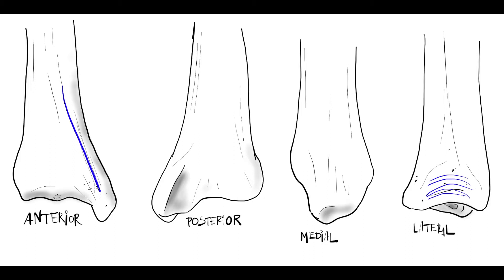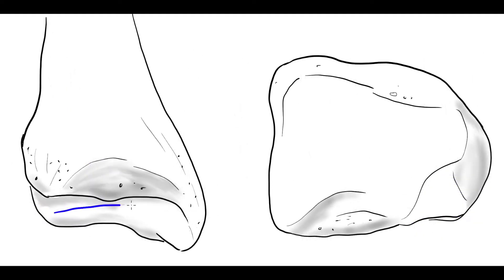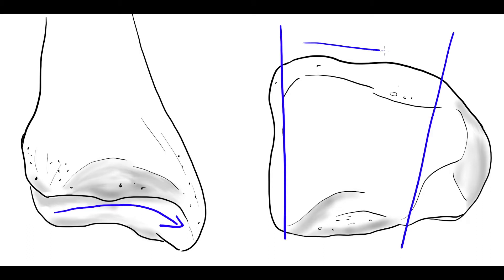The medial malleolus is an extension of the tibia. The distal surface for contact with the talus is concave in the sagittal plane and convex with a ridge in the coronal plane. From an anterior inferior view, we can see that the inferior articular surface continues medially into the malleolar articular surface. From an inferior view, we see that the inferior surface is wider anteriorly.